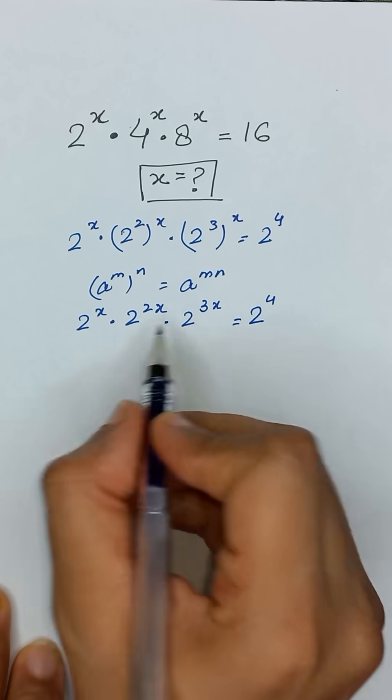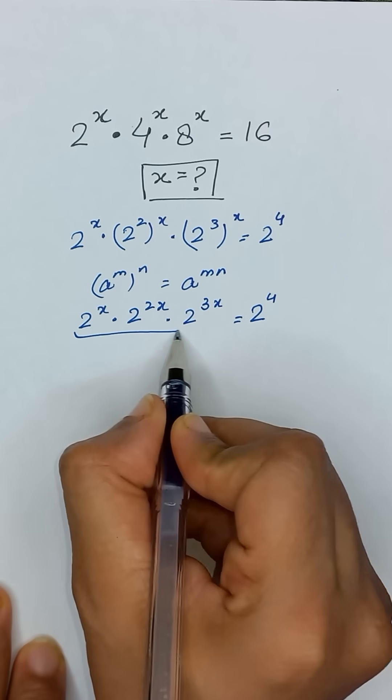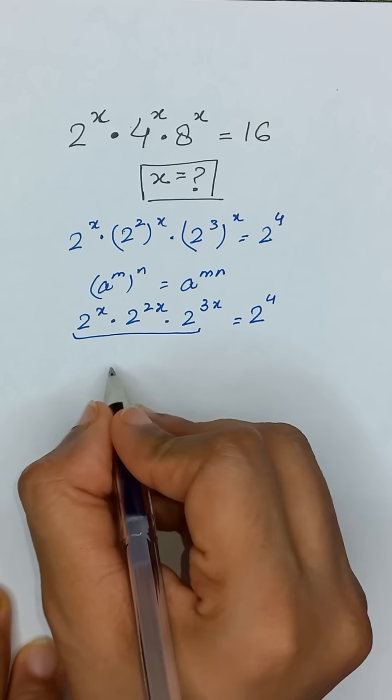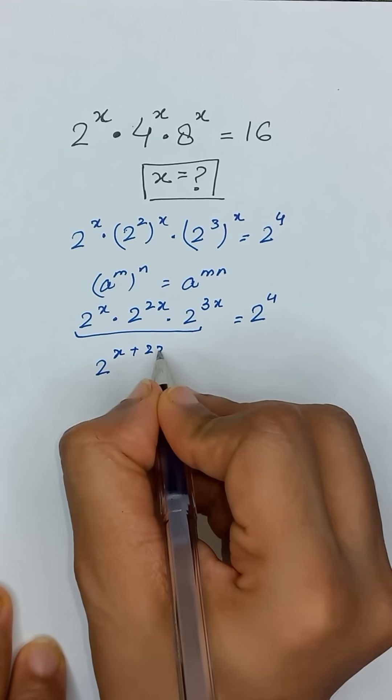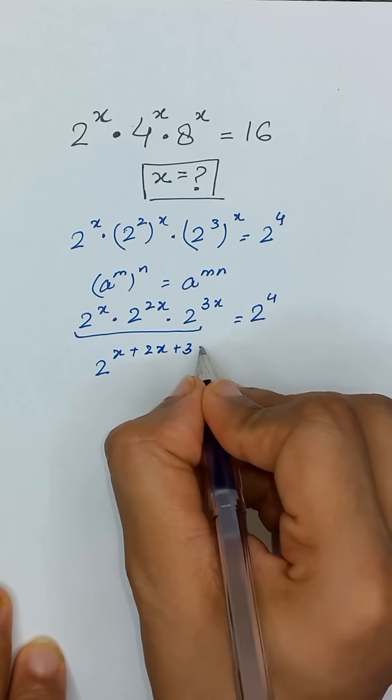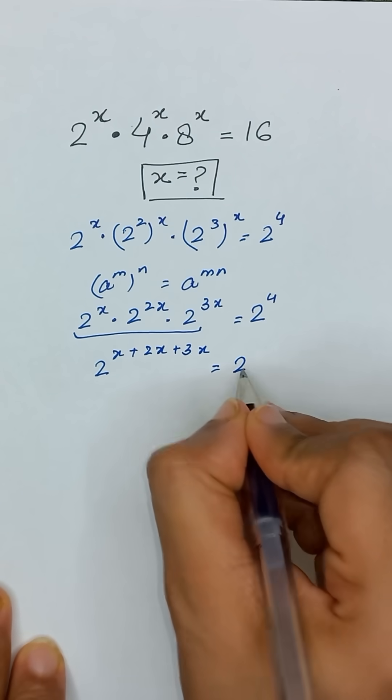The bases are the same and these three terms are multiplied, so we can add the powers. It becomes 2 to the power x plus 2x plus 3x, which equals 2 to the power 4.